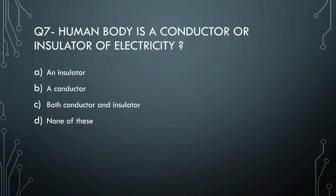Next question: the human body is a conductor or insulator of electricity? The right answer is conductor. The human body is a conductor. If we touch any electric source, we feel current because electricity passes through our body. That is why we feel electric shock - our body conducts electricity.